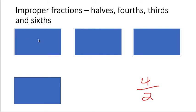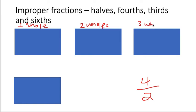What we're going to look at are these four rectangles — one, two, three, four. So I have four whole rectangles. Let me just label that to get that out of the way. This is one whole, this is two wholes, like two whole rectangles, three wholes, and this is four wholes. So we have four whole rectangles.